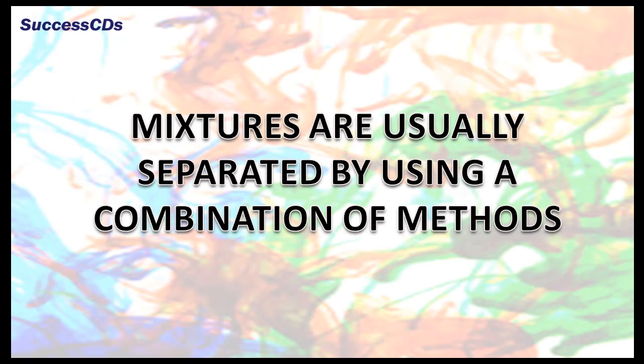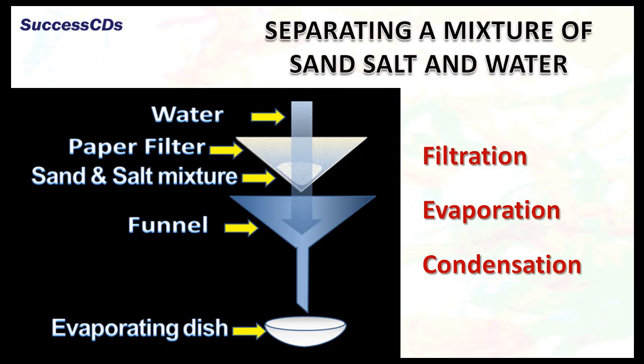Mixtures are usually separated by using a combination of methods. For example, if we have to separate a mixture of sand, salt, and water — salt is soluble in water and sand is insoluble — so first we filter it; the sand stays in the filter paper. Next, we evaporate the salt solution; the water evaporates leaving behind the salt. The water is later condensed back.